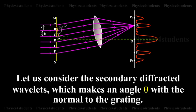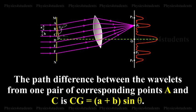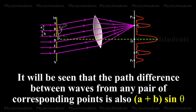Let us consider the secondary diffracted wavelets which make an angle theta with the normal to the grating. The path difference between the wavelets from one pair of corresponding points A and C is Cg equal to A plus B into sin theta. It will be seen that the path difference between waves from any pair of corresponding points is also A plus B into sin theta.